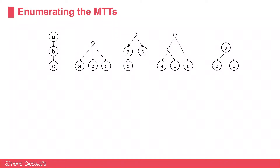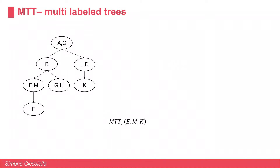Following this definition, we are able to enumerate all possible minimal tree topologies for a set of labels, including all additional possible permutations of the labels. Now let's have a look at multi-label trees. Multi-label trees are trees where each node can have more than one label — these are the most common type of cancer trees available.